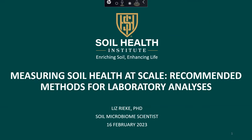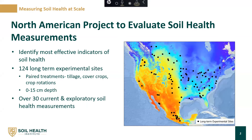Thank you, Christine, and thank you everybody for attending today. I'd like to start off with a bit of background of how we got here. As Christine mentioned, back in 2019 a team of scientists, including myself, set out on the North American Project to evaluate soil health measurements. The goal of this project was to identify the most effective indicators of soil health. To do this, we took soil samples from 124 long-term experimental sites across Canada, the U.S., and Mexico.